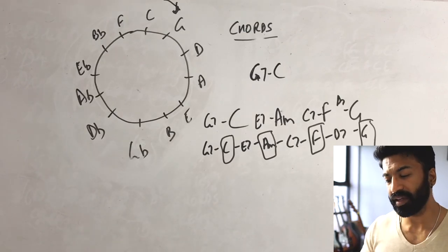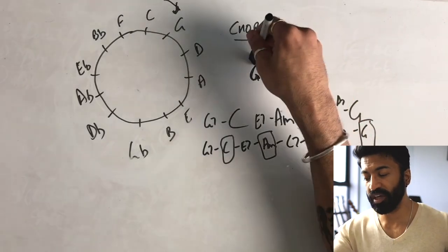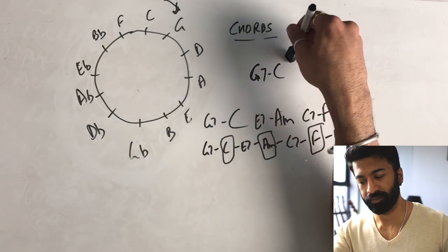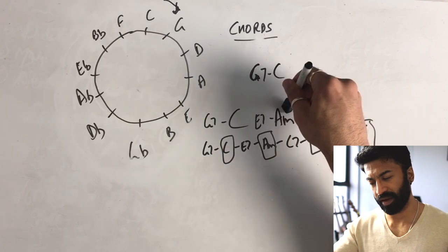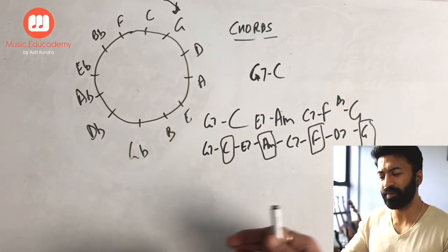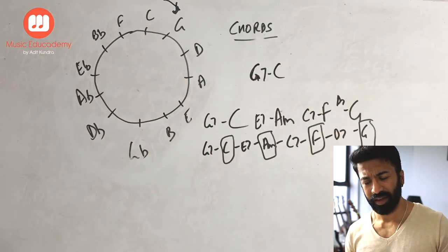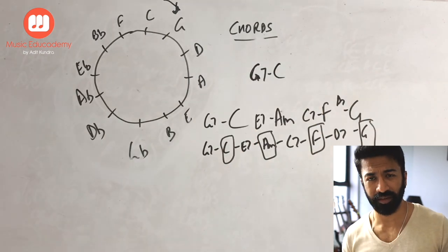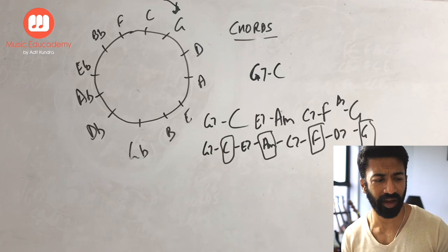Now, I have told you that G moves to a C, E moves to an A, C moves to an F, D moves to a G. So this is generally our order, progression. Chords move in this order. It is called harmonic relation, harmonic progression.